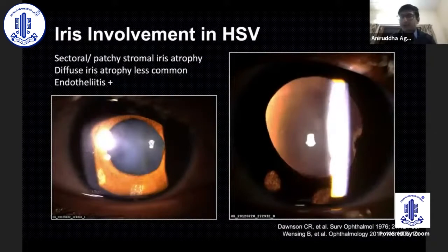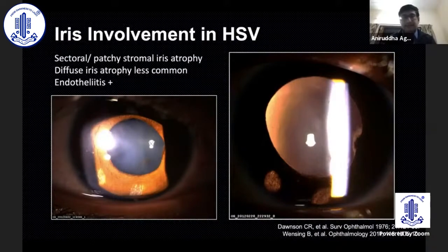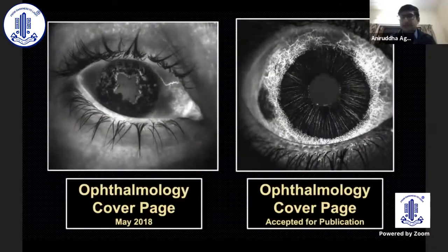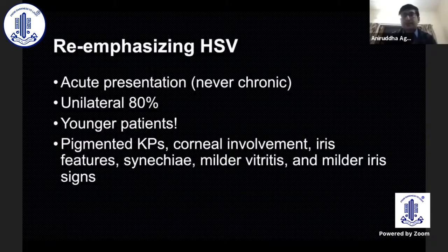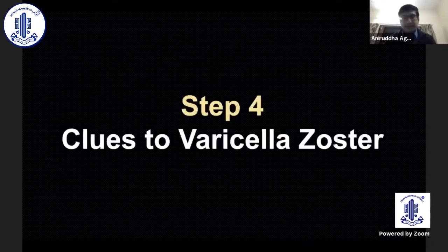Iris involvement in HSV is usually sectoral, with patchy stromal iris atrophy. Diffuse atrophy is less common and is more typical of varicella. These patients may have endotheliitis. To re-emphasize: HSV is an acute presentation, never chronic, unilateral, with pigmented KPs and iris involvement.